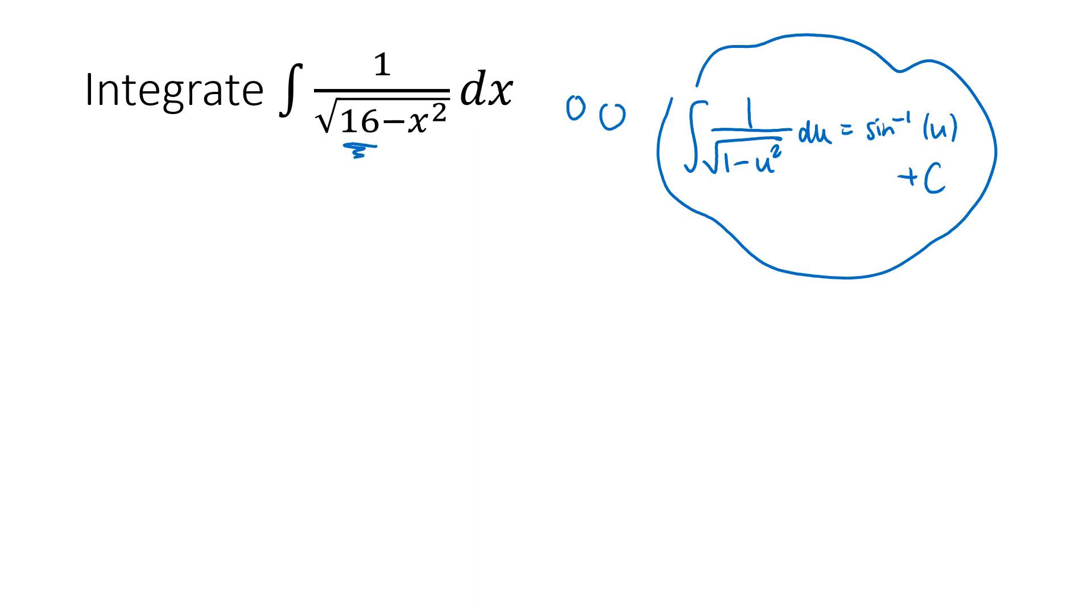And so the trick here, the method, is to imagine, wouldn't it be great if instead of x squared there, we had 16u squared? Because if we had a 16 in both places, then we'd be able to factor out the 16, and we would get the integral that we know. And so that's exactly what we're going to do. We're going to make sure that x squared works out to be the same as 16u squared.